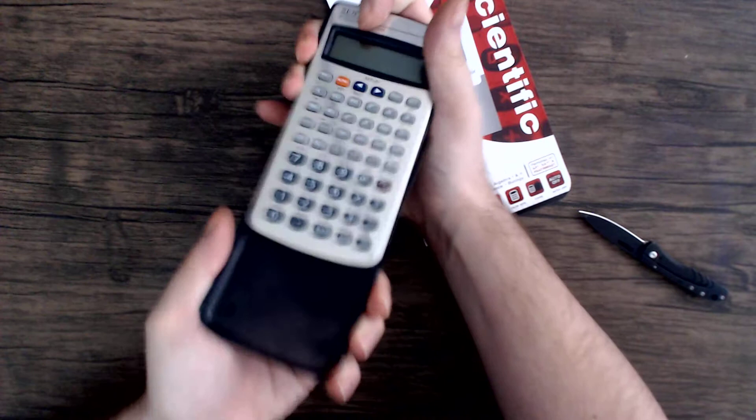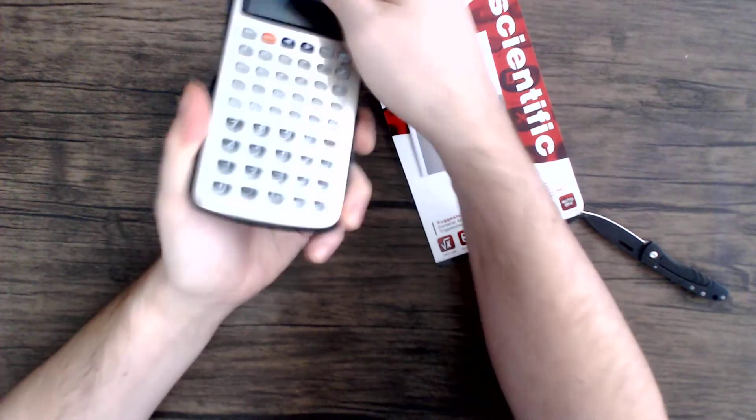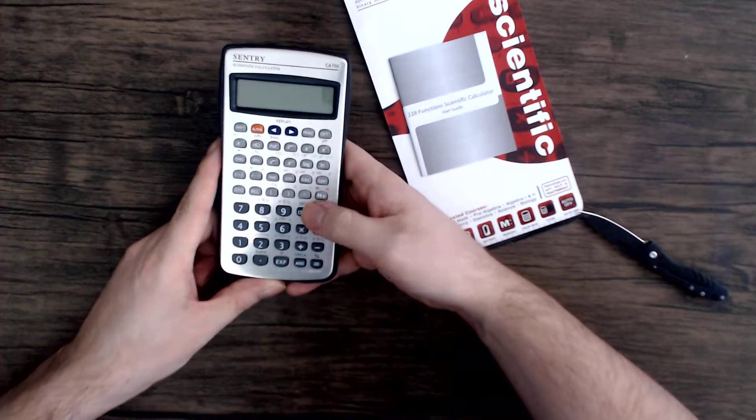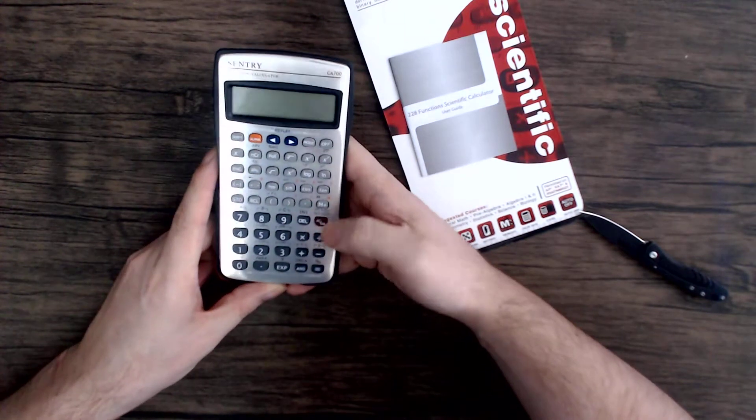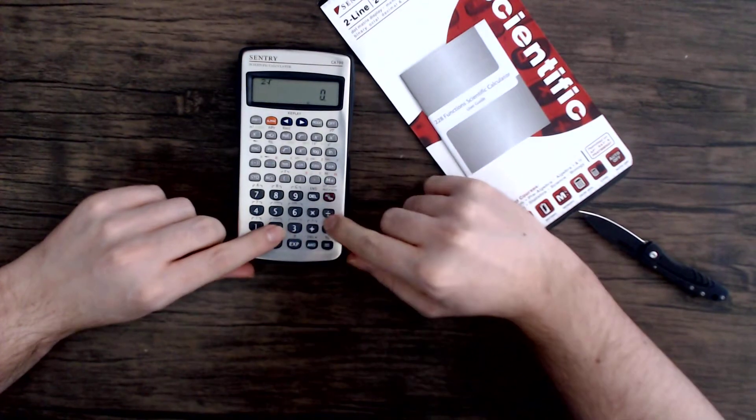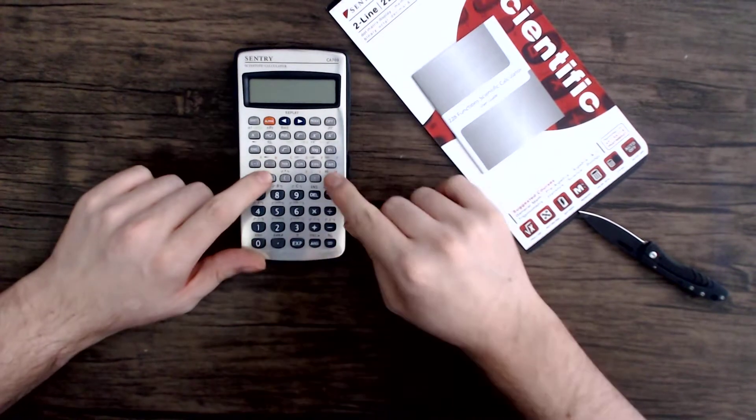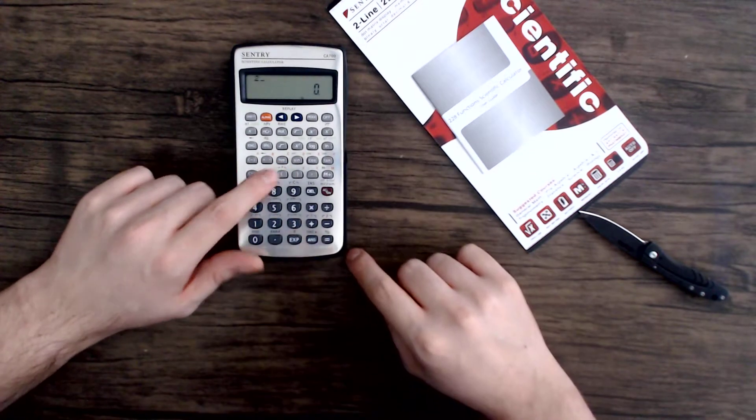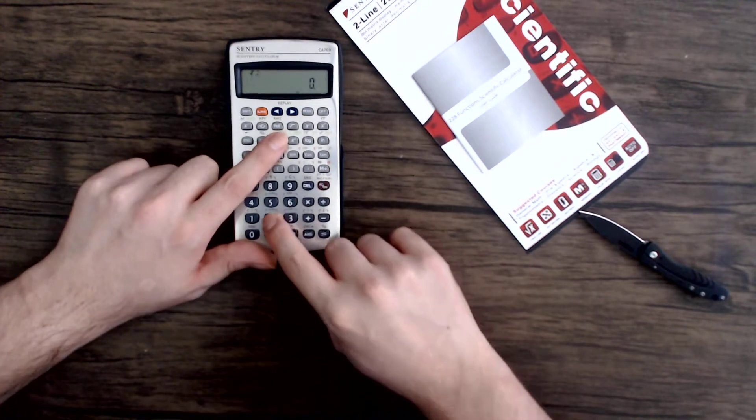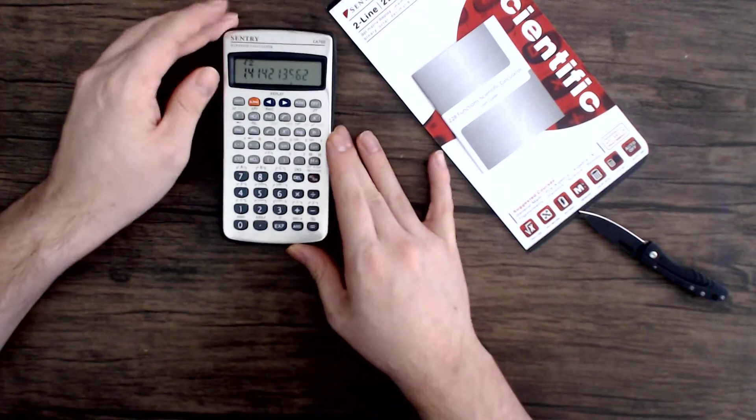Strange placement of the on button, just kind of off to the right, sort of in the middle. Let's play around with this. Square root of two. That's right.